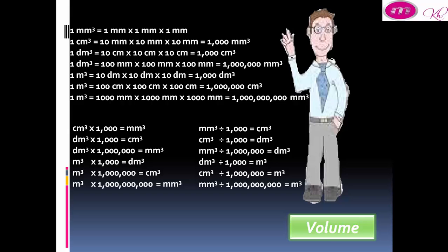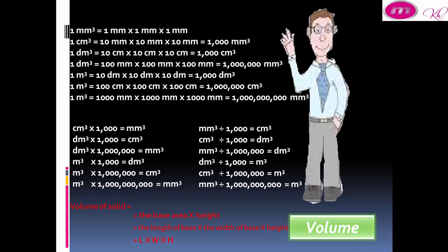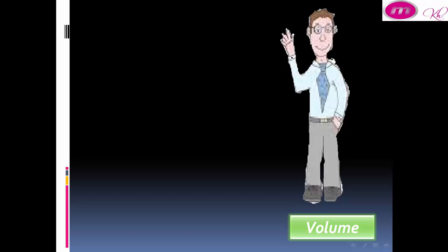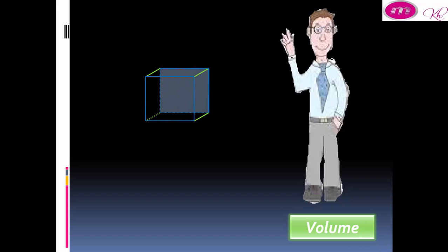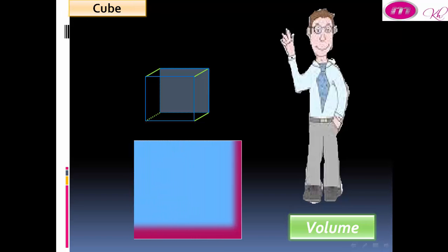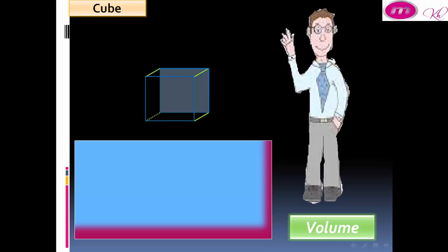Volume of a solid equals the base area by height, which equals the length of base by the width of base by height, equal to L by W by H.